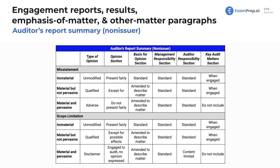Now we're moving along to a summary on the auditor's report — this is for non-issuers. We're going to cover what happens if there's a misstatement and what happens if there's a scope limitation: an immaterial misstatement, an immaterial scope limitation, a material but not pervasive misstatement, a material but not pervasive scope limitation, and then material and pervasive for both. We're going to see it in relation to what type of opinion you should issue in each circumstance.